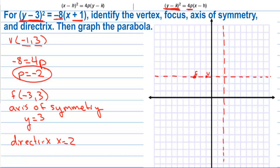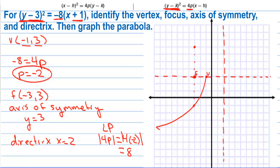We'll use the latus rectum to graph this. The latus rectum equals |4p| = |4(−2)| = 8. That means there are two points on the parabola 4 units away from the focus — 4 units up and 4 units down. We plot those two points and draw a parabolic shape through them.